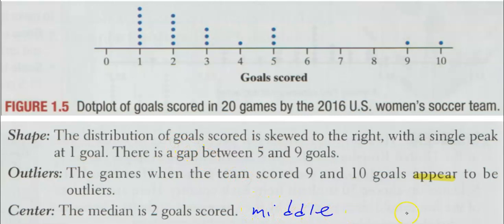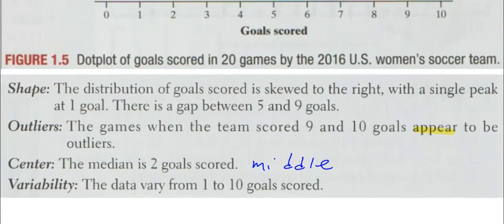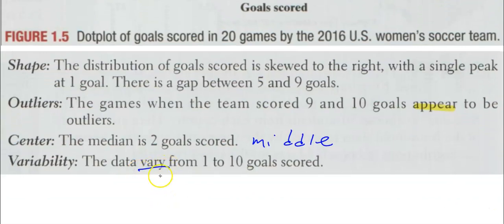The median is two goals scored. That is the middle number. Median is middle if you didn't remember. And variability—the data vary from one to ten goals scored. But make sure you use the word vary. Do not use range.